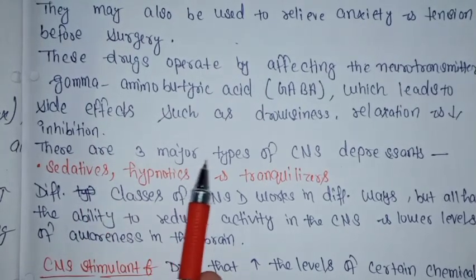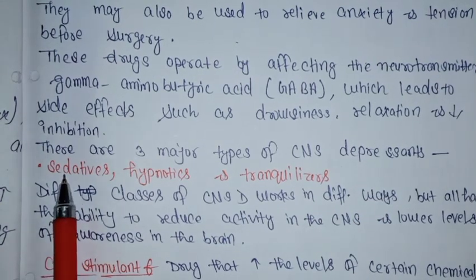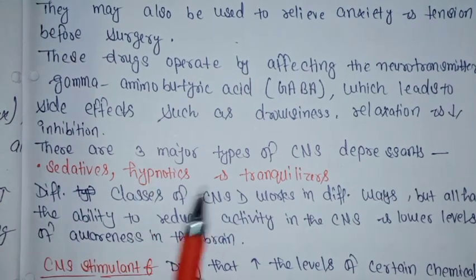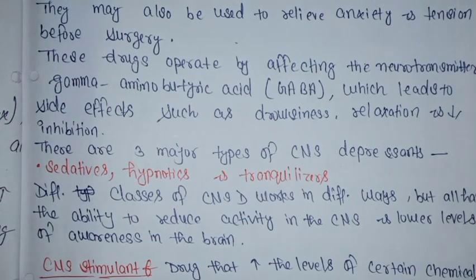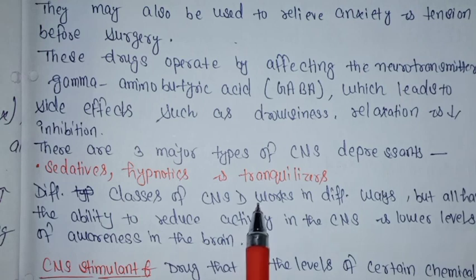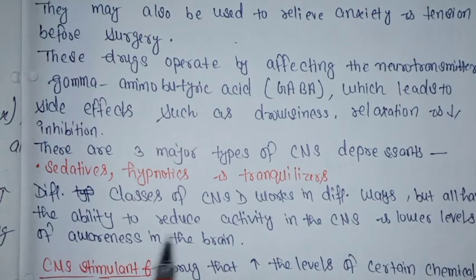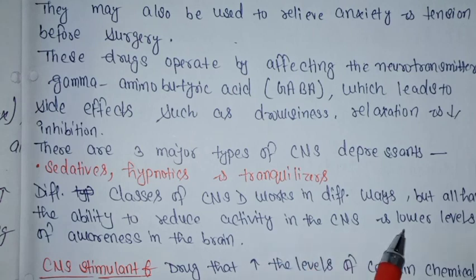There are three major types of CNS Depressants: Sedatives, Hypnotics, and Tranquilizers. Different classes of CNS Depressants work in different ways, but all have the ability to reduce activity in the CNS and lower the level of awareness in the brain.